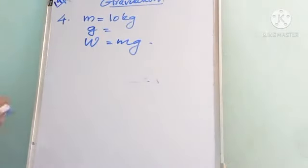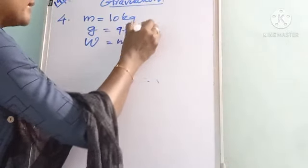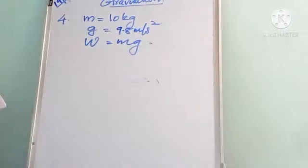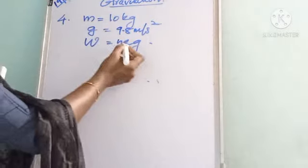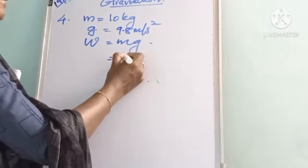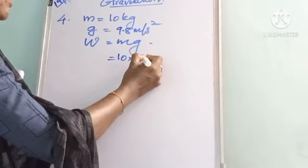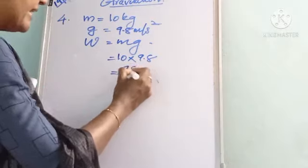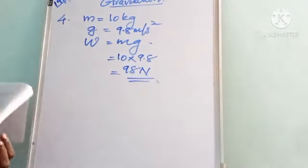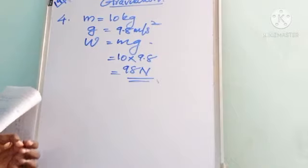You should memorize the value of small g (acceleration due to gravity) = 9.8 m/s², and also the value of capital G (gravitational constant). Substituting m = 10 kg and g = 9.8, we get W = 10 × 9.8 = 98 N. That is the weight of the object on Earth.